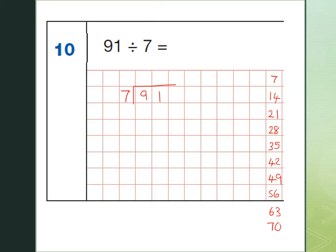So, first bit: 7 goes into 9 once, but it doesn't go into 9 exactly, there is a remainder. So, the number that's left over is 2, because 9 take away 7 is 2. So what I do with a remainder, I put it in front of the 1 there, to make 21.